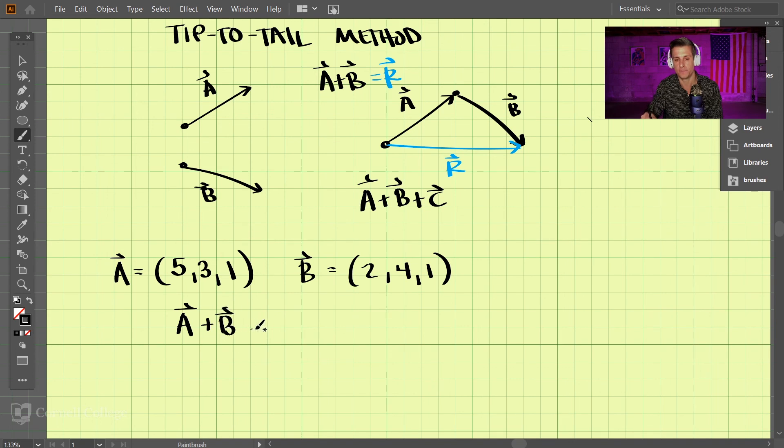If we want to add these two vectors together, A plus B, we would just add the components together. So we would have 5 plus 2, which is 7, and then we have 3 plus 4, which is 7, and then we have 1 plus 1, which is 2. So our resultant vector then would be equal to these coordinates.